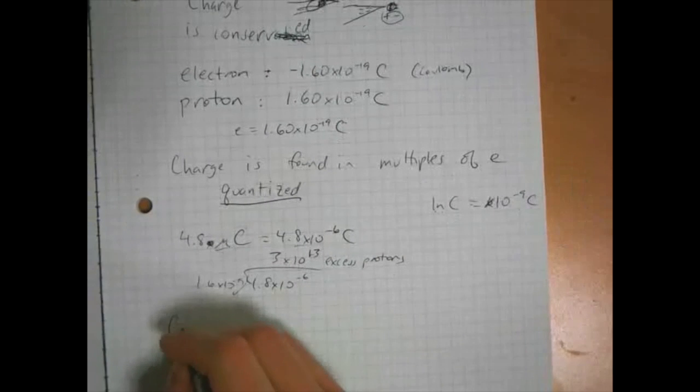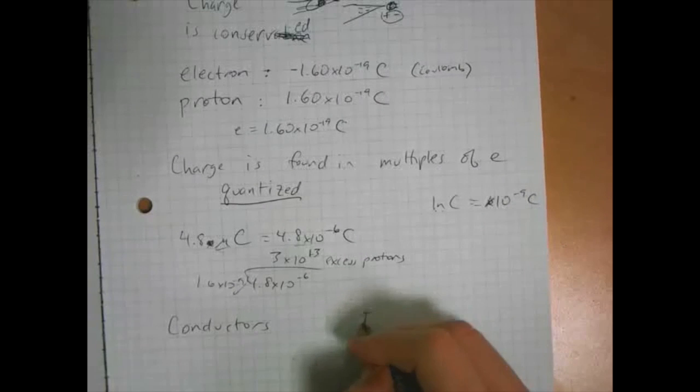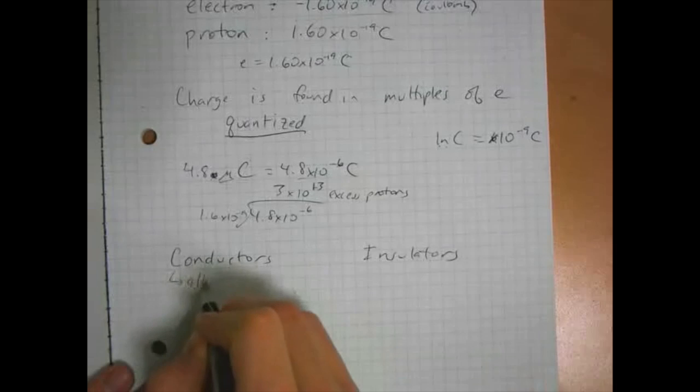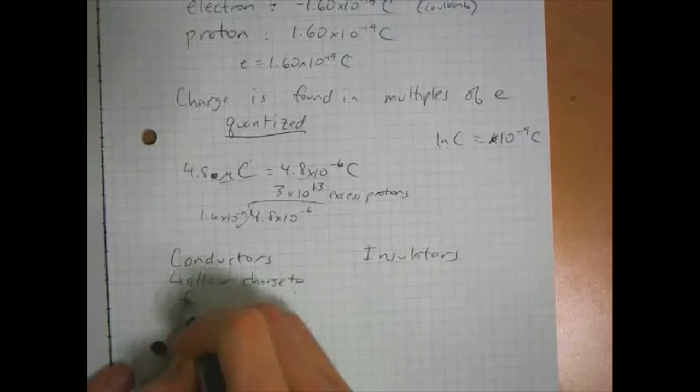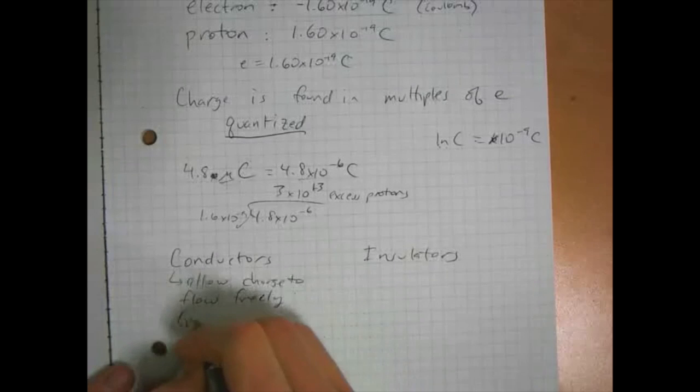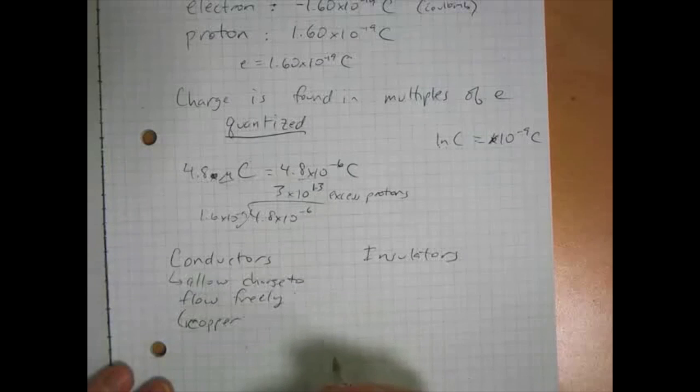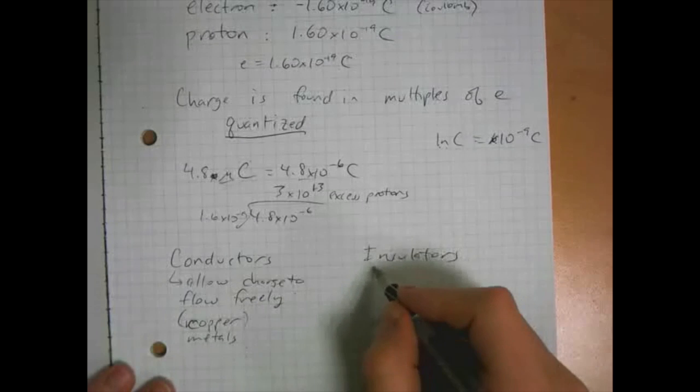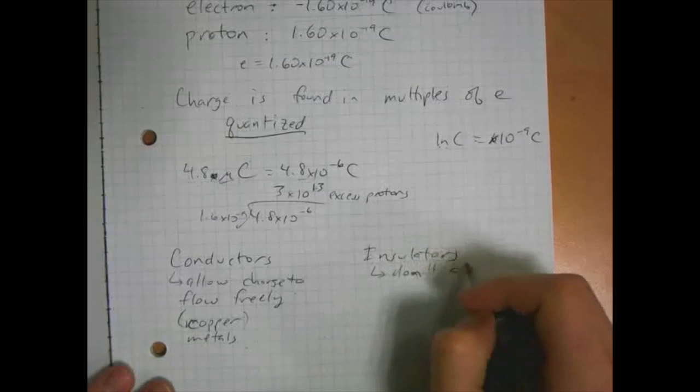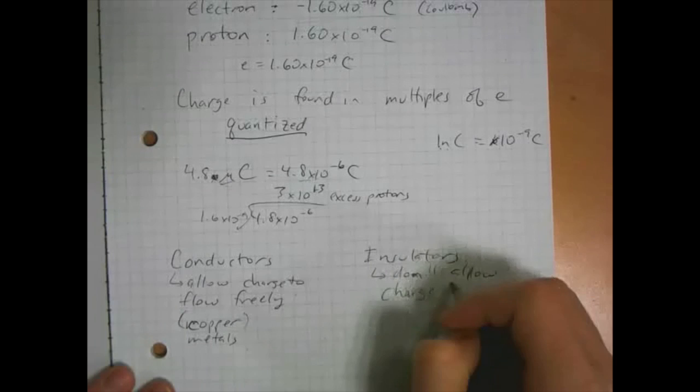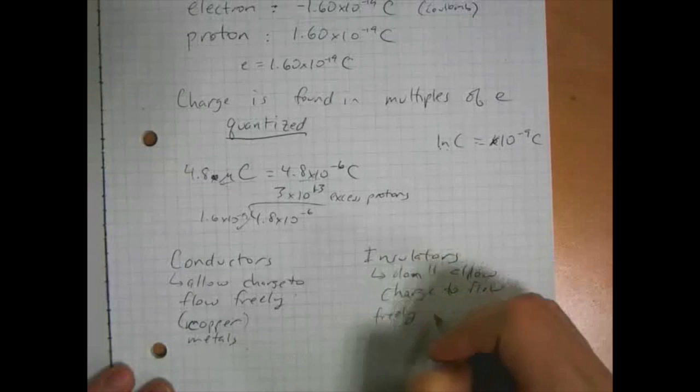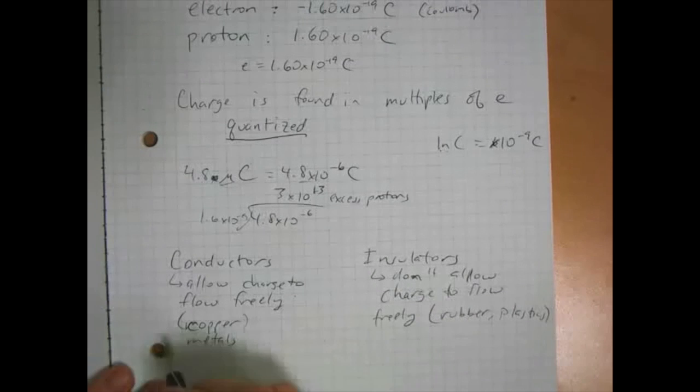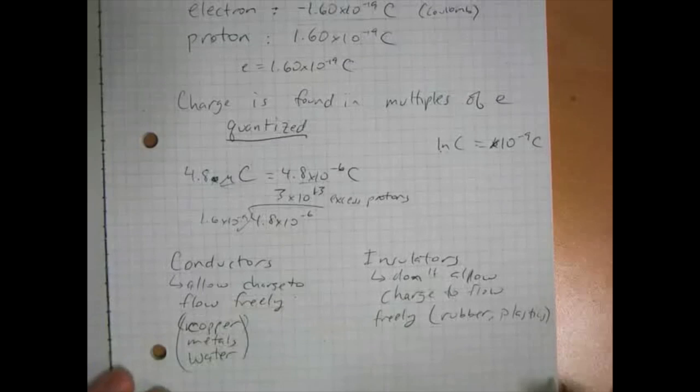There are two types of substances, conductors and insulators, so named for how charge responds to them. Conductors allow charge to flow freely. Many metals are conductors like copper. Generally conductors are metals. Insulators do not allow charge to flow freely. Things that are insulators are like rubber, most plastics, and so forth. Water is a conductor. It's important to know if it storms and you're swimming, you should get out of the water because you could get electrocuted.